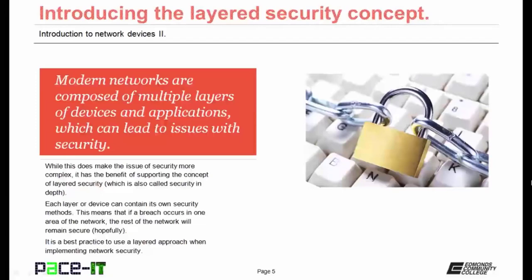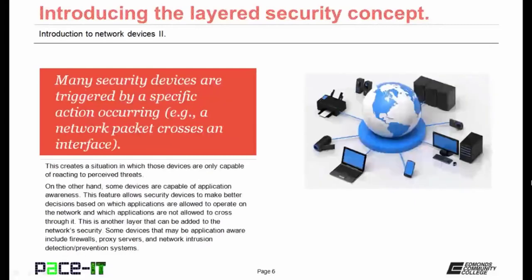Each layer or device can contain its own security methods. This means that if a breach occurs in one area of the network, the rest of the network will remain secure. It is a best practice to use a layered approach when implementing network security. Many security devices are triggered by a specific action occurring, such as a network packet crossing an interface on a router, creating a situation where those devices are only capable of reacting to perceived threats. On the other hand, some devices are capable of application awareness, allowing security devices to make better decisions based on which applications are allowed to operate on the network.